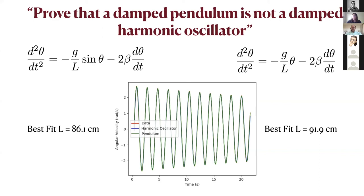We show them an equation they can derive: the full pendulum equation on the left. If you say sine theta equals theta, you get the damped harmonic oscillator on the right. They now have two models — which one is correct, and can they prove it? The natural answer is the small angle approximation. But for angles less than about 90 degrees, you can get a good fit with the damped harmonic oscillator by increasing its period — functionally lengthening the pendulum.